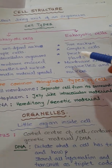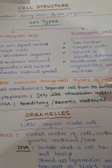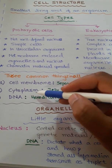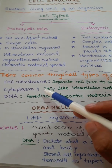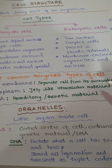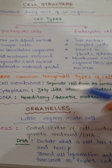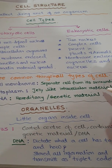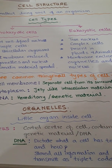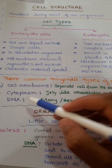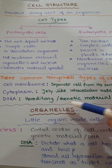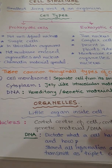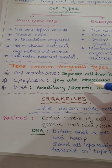There are three common components in all types of cells: cell membrane, cytoplasm, and DNA. The cell membrane separates the cell from its surrounding environment. Cytoplasm is the jelly-like intracellular material, and DNA is the hereditary or genetic material.